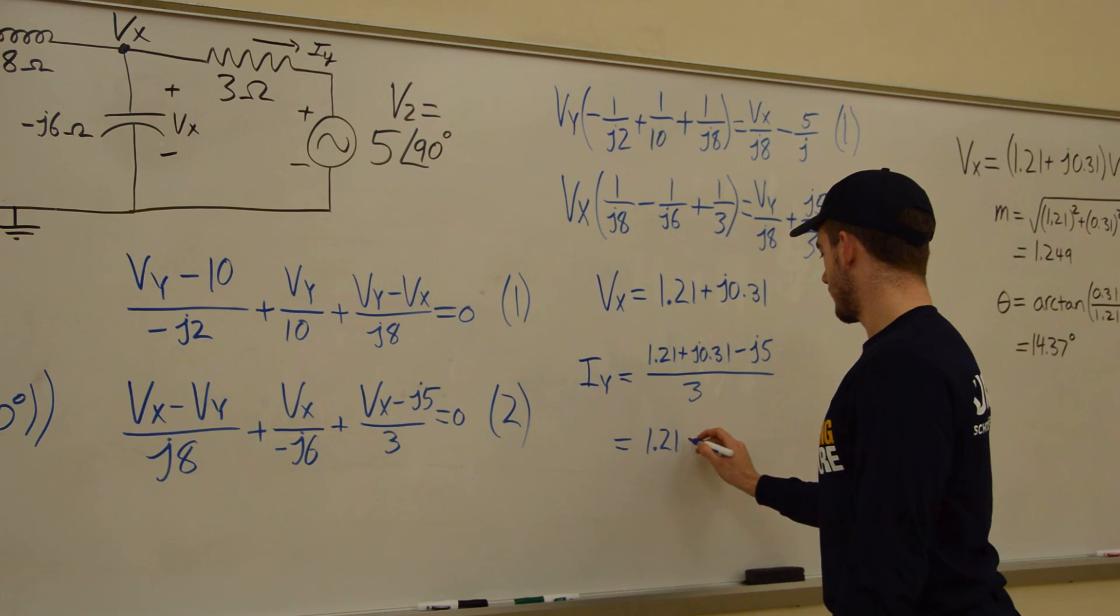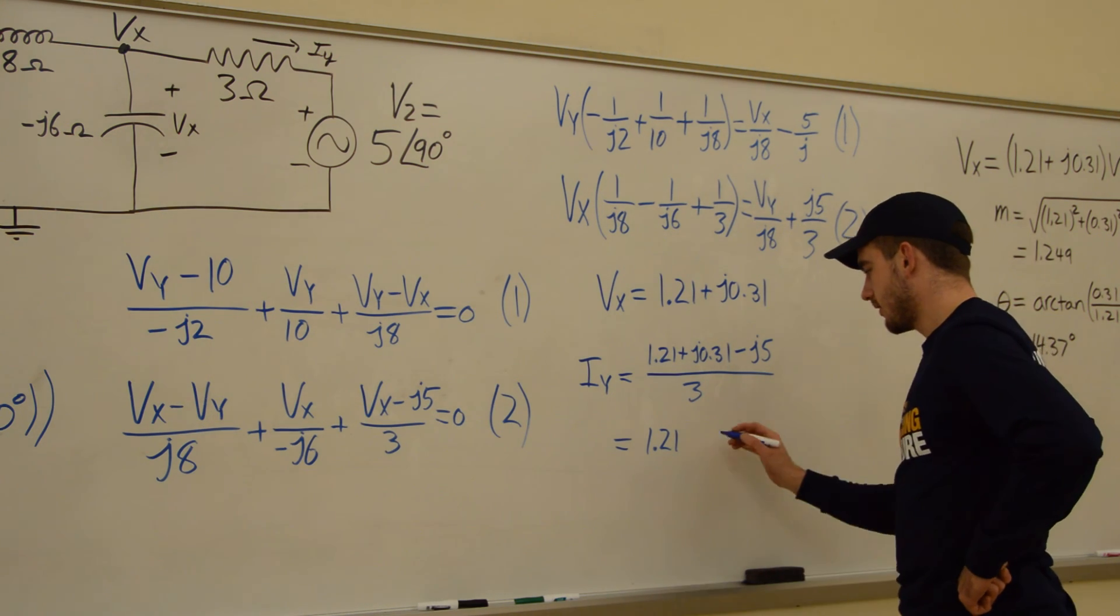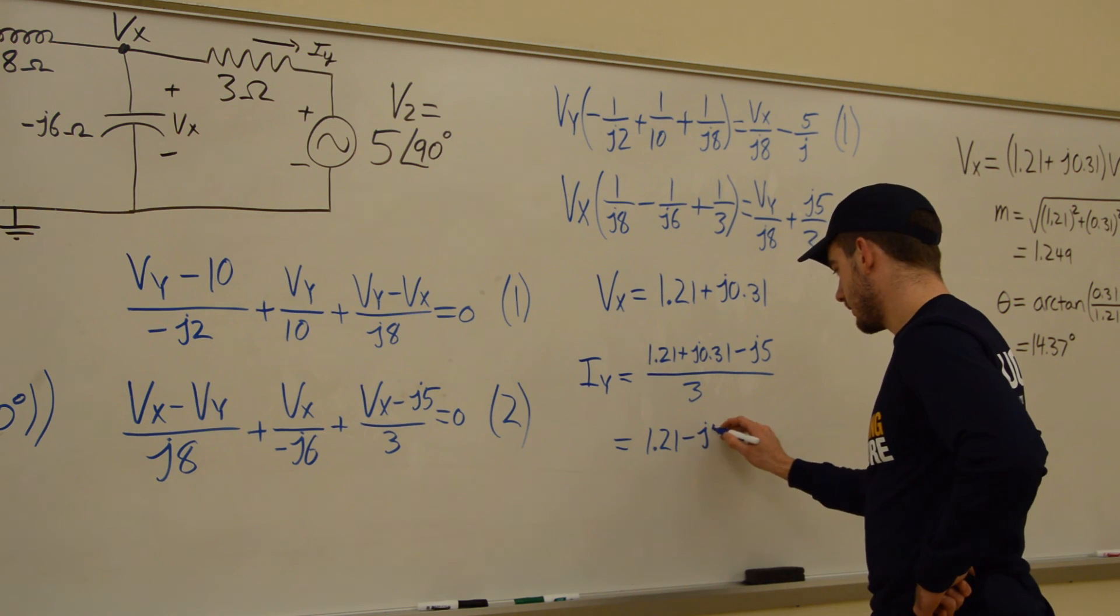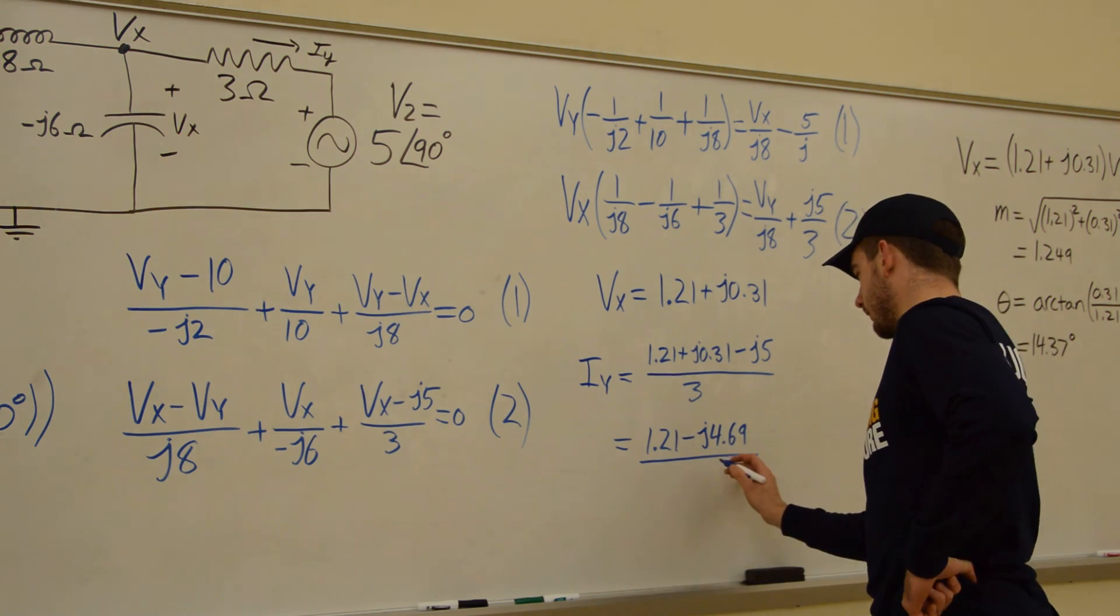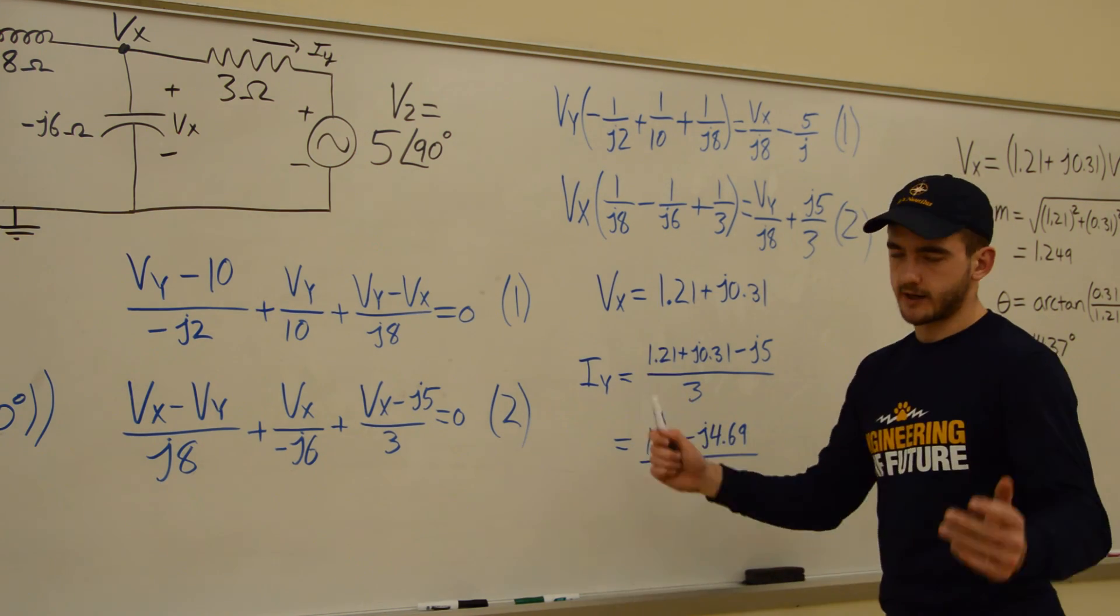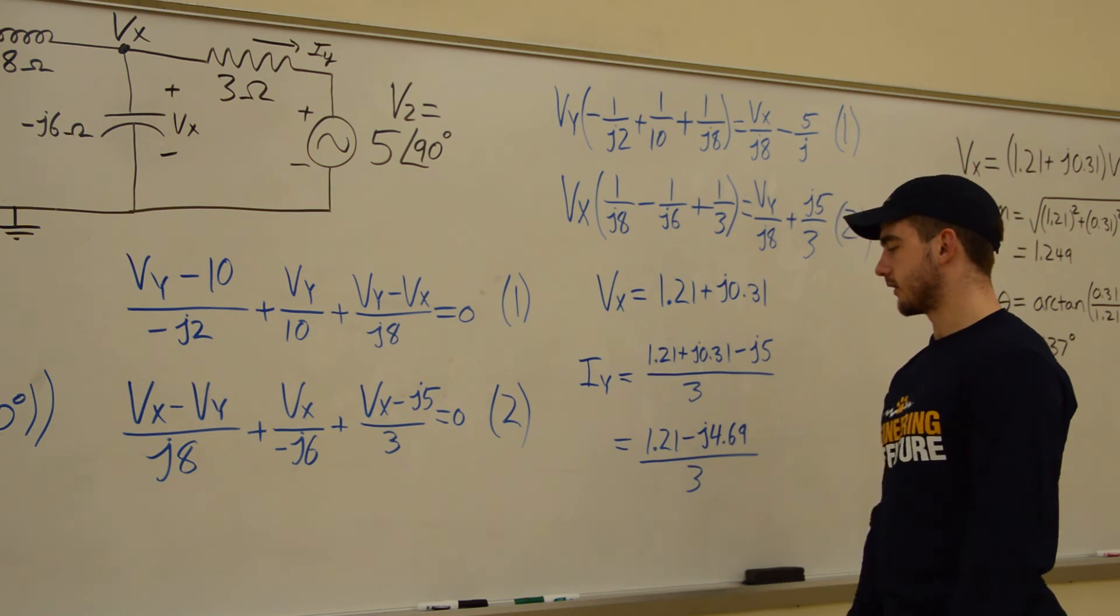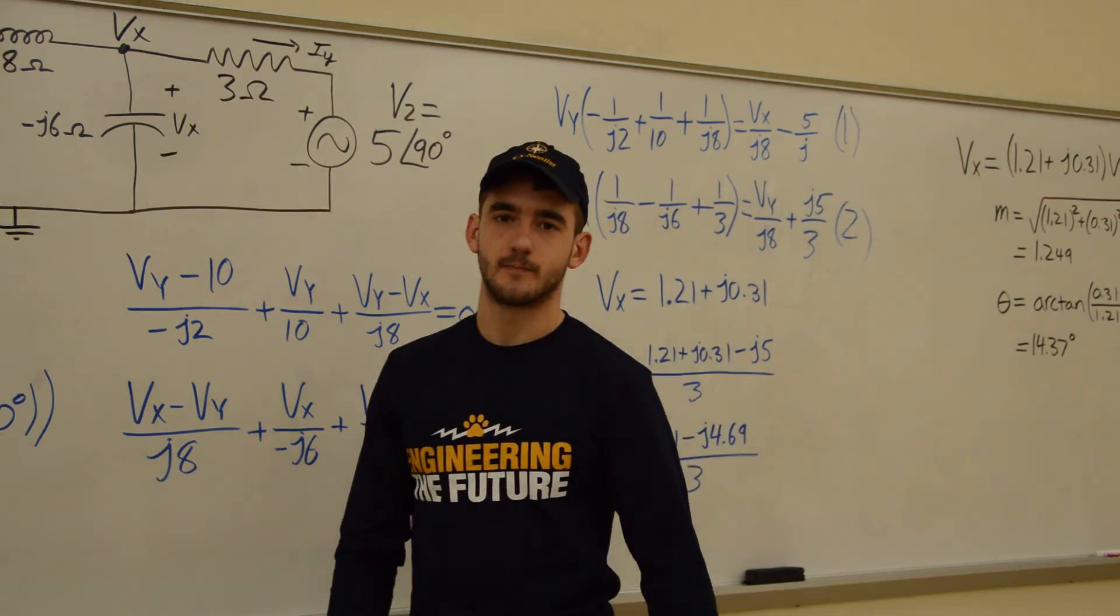And this equals 1.21, plus, let's see if I can get this in my head, 4.69. So minus J, 4.69, all over 3. And again, check out that video if you want to find out how to convert this into polar form. But that is it for today. Hope it helps.